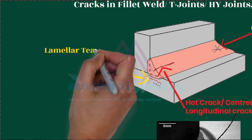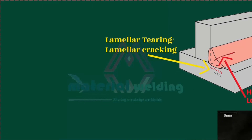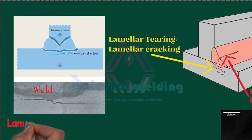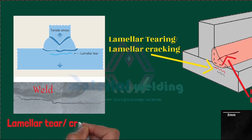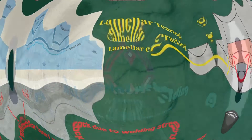When a base metal with high inclusions is welded, it is prone to delaminate from these inclusions due to weld stresses. These types of cracks are called lamellar cracking or lamellar tearing. Next, let's see different types of cracks based on their appearances.